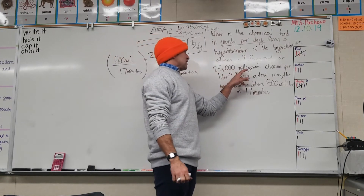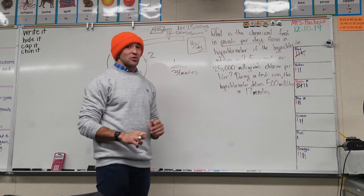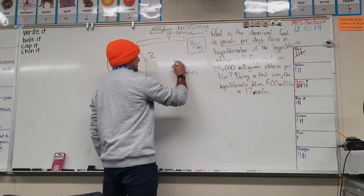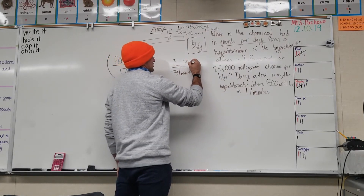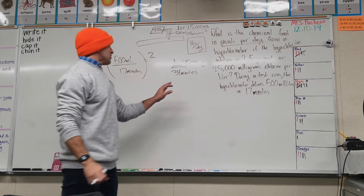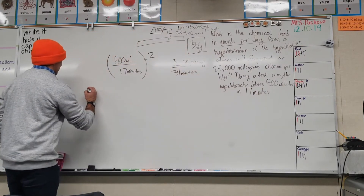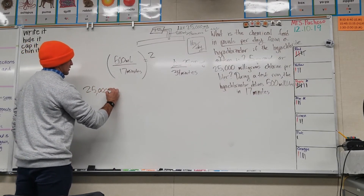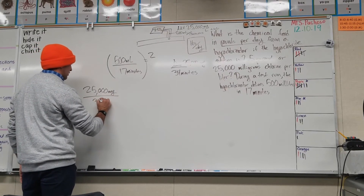We know there are 25,000 milligrams of chlorine in every liter. Since we now have one liter per 34 minutes, we can substitute: we have 25,000 milligrams per 34 minutes. Now we have weight over time. It's just a matter of converting this weight to pounds and this time to a day.